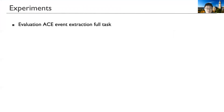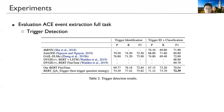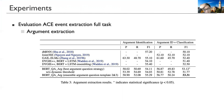We conduct evaluation on ACE datasets. For trigger extraction, our model substantially outperforms previous work on both trigger identification and classification. For argument extraction, even without relying on entity annotations and resources, our framework with the best questioning strategy significantly outperforms the previous state-of-the-art model, and when we ensemble models with two questioning strategies, the performance gets even higher.